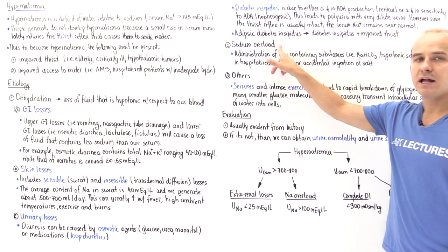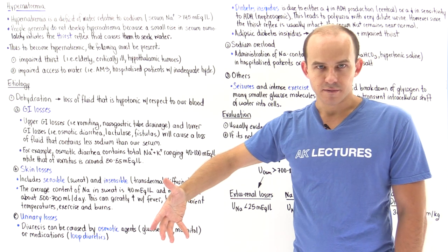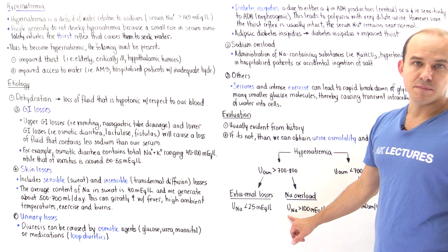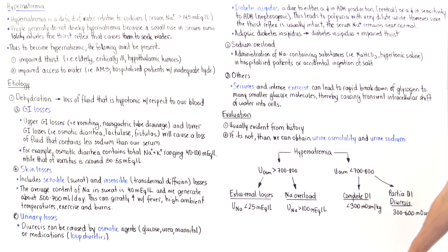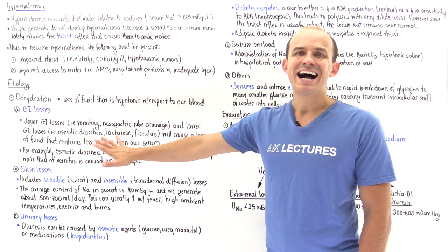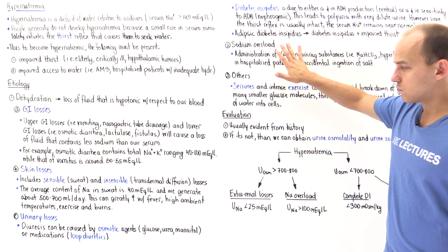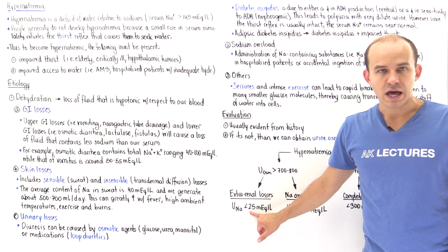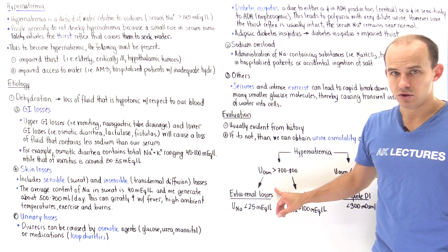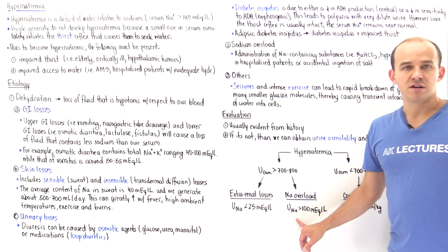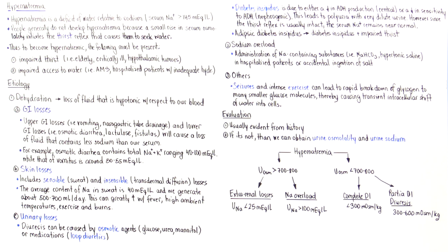But if we're ingesting a lot of sodium, the body doesn't want to retain it, so the kidneys excrete it — resulting in very high urine sodium, generally over 100 milliequivalents per liter. So: urine osmolality over 700 to 800 suggests dehydration or sodium overload; urine sodium appropriately low (below 25) indicates extra-renal losses, while urine sodium very high (over 100) indicates sodium overload.